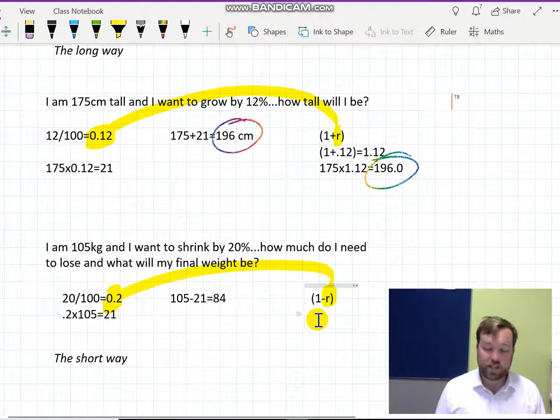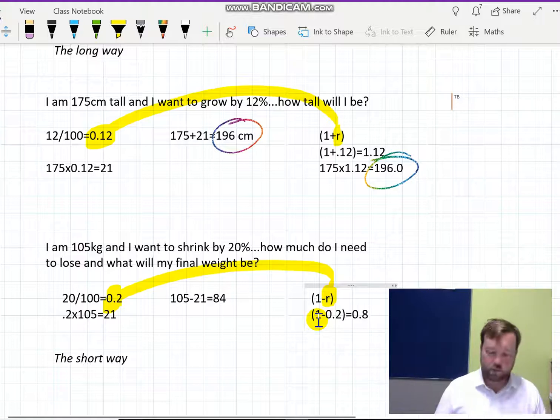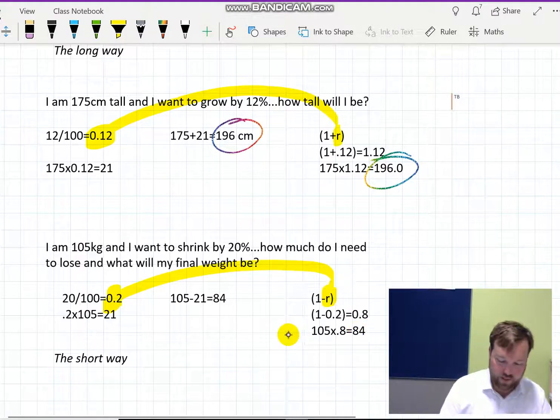Now, multiplying for decreasing, instead of adding on the r, you take it off. So we have 1 minus 0.2—I was jumping to the answer—and that gets us 0.8. So we use that as the multiplier and take 105, multiply by 0.8, and the result is the 84, exactly the same as it was there.